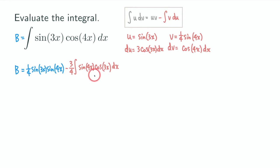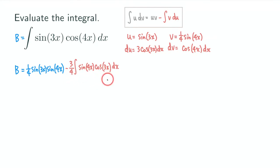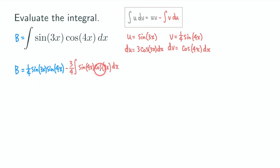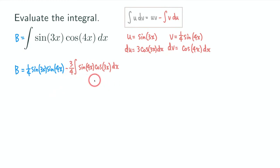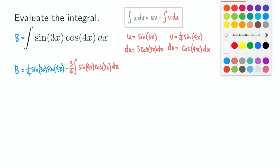So what do you do next? You need to do integration by parts one more time. After doing it a second time, we are going to get back to the original integral, and in that case we can solve for b, because we can replace that integral with b.